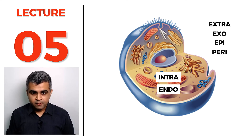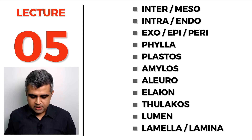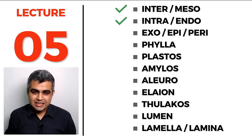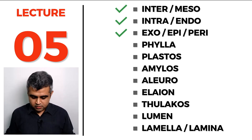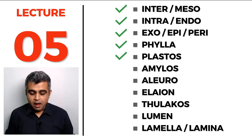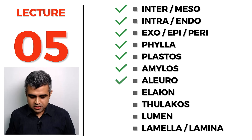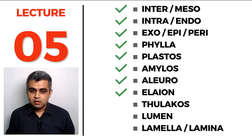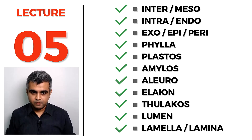Extra or exo simply means outside, epi means outside and above, and peri means outside and surrounding. Other terms covered include: phyla meaning leaf, plastos meaning something specially made or produced, amylos meaning carbohydrate or starch, eluro meaning wheat flour or proteins, eleon meaning oil or fats, thulacos meaning pouches, lumen meaning the cavities inside things, and lamella or lamina meaning sheets or membranes.